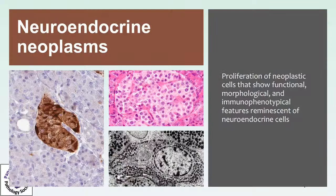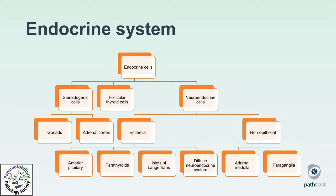The definition of Neuroendocrine Neoplasm can be given as the proliferation of neoplastic cells that show functional, morphological, and immunophenotypical features reminiscent of Neuroendocrine cells. Neuroendocrine cells are a major component of the endocrine system, which is composed by organs and structures with different morphological and functional aspects. We have serodogenic cells, follicular thyroid cells, and neuroendocrine cells, which can be divided into epithelial and non-epithelial. The non-epithelial neuroendocrine cells are found in the adrenal medulla and paraganglia.